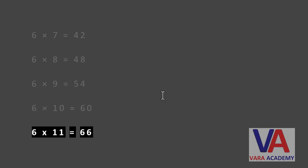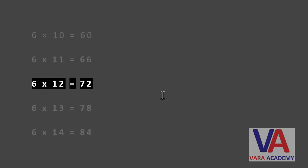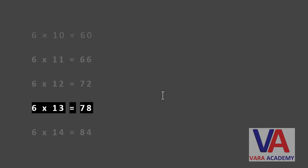Six times eleven equals sixty six. Six times twelve equals seventy two. Six times thirteen equals seventy eight.